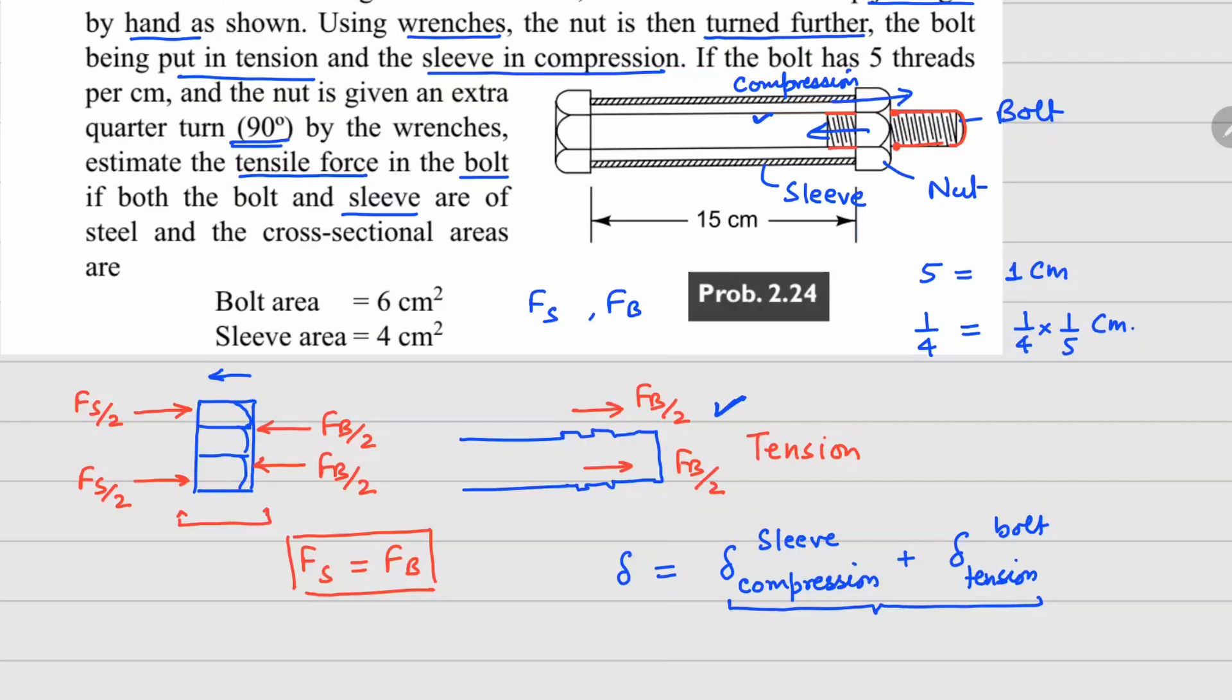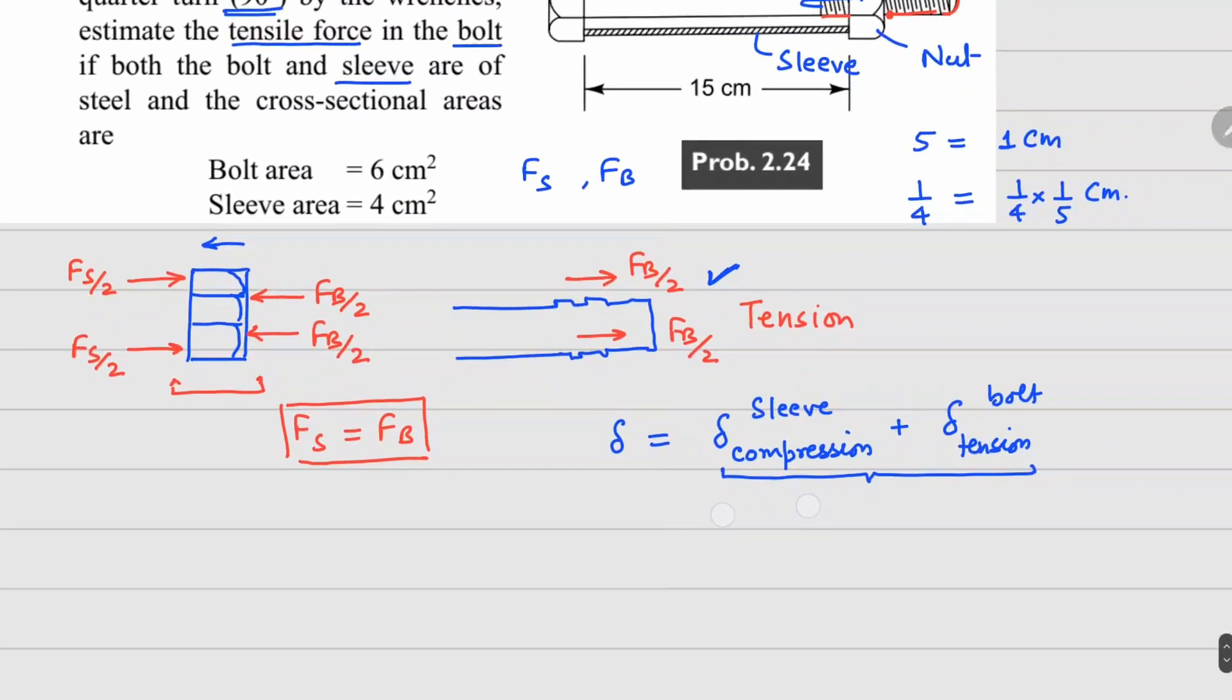Your net delta is going to be dependent on the sleeve force: Fs times the length of the sleeve divided by elastic modulus of sleeve and area of the sleeve. Similarly for the bolt: Fb times length of the bolt divided by elastic modulus of the bolt and area of the bolt.